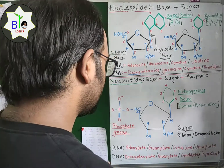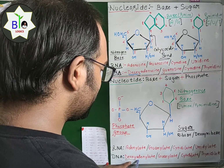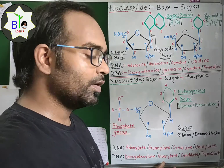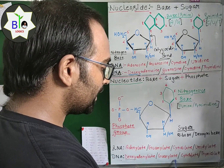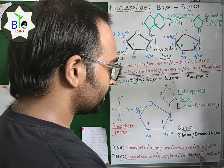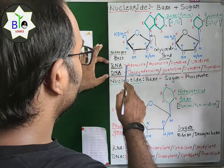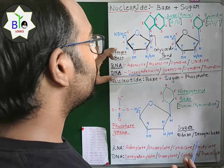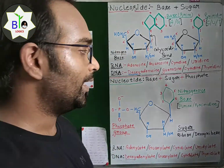For nucleotides in DNA, the prefix 'deoxy' is added. If adenine is present it is called deoxyadenylate; guanine gives deoxyguanylate; cytosine gives deoxycytidylate; and thymine gives deoxythymidylate. You need to understand this terminology for nucleosides and nucleotides, as it is important for exams.